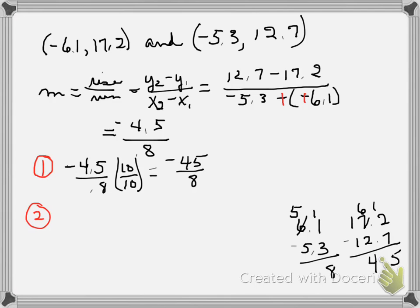A second method involves changing my decimals to fractions. So I will have negative 4 and 5 tenths divided by 8 tenths. So that will be negative, changing that to an improper fraction. 10 times 4 is 40 plus 5 is 45. So negative 45 tenths. And to divide fractions, you multiply by the reciprocal, so times 10 eighths. And then I can cancel the tens, and I get the same answer that I got before, that it is a negative 45 eighths.